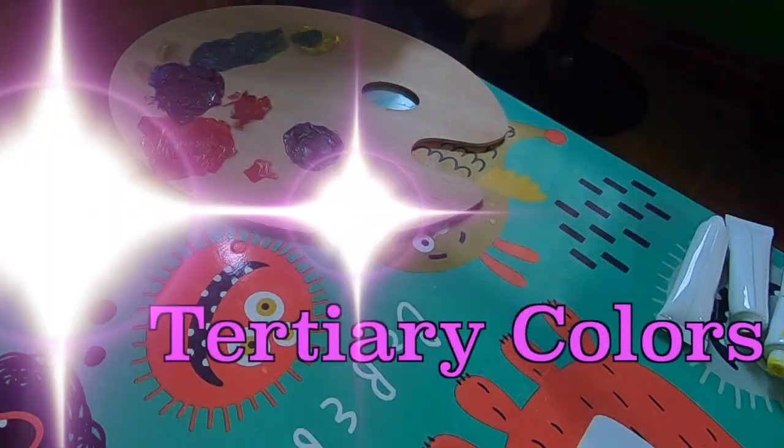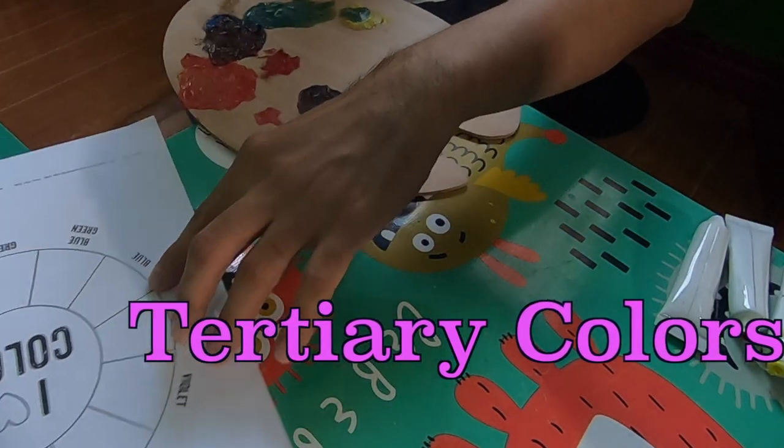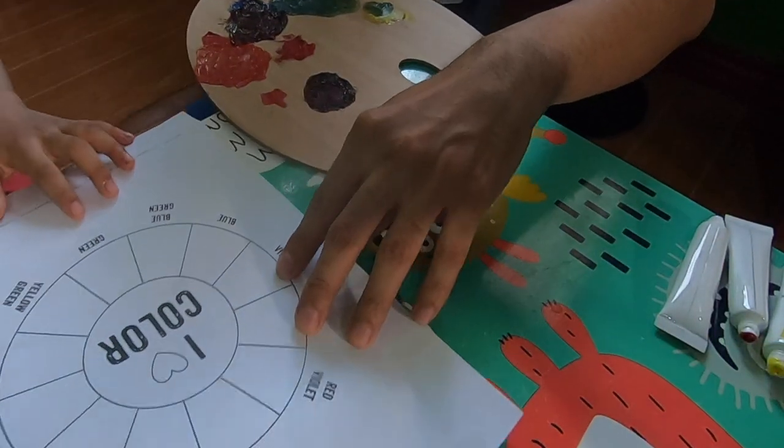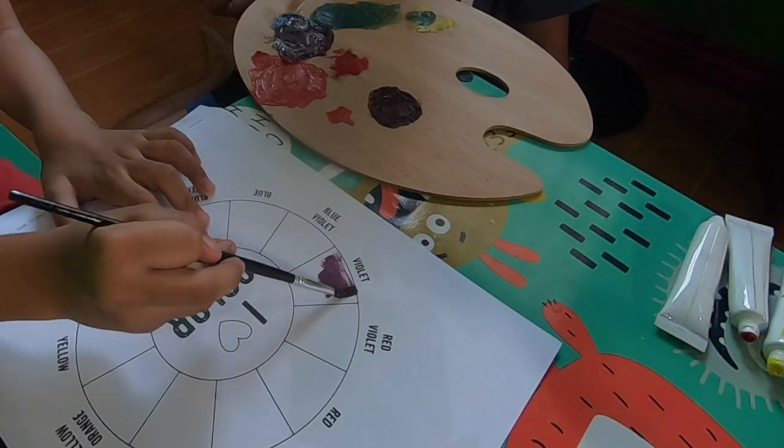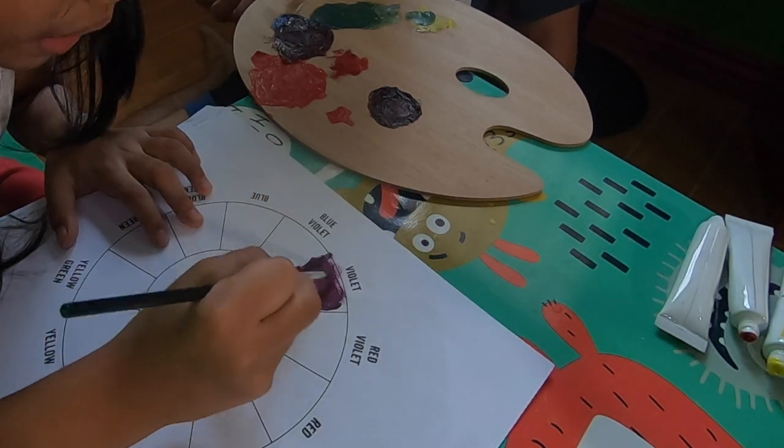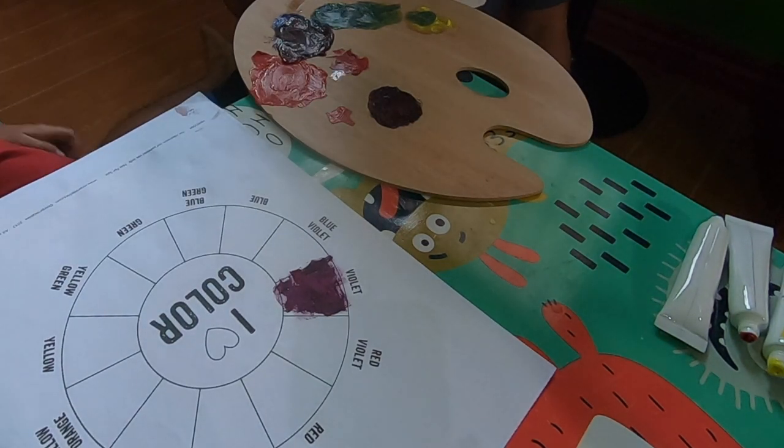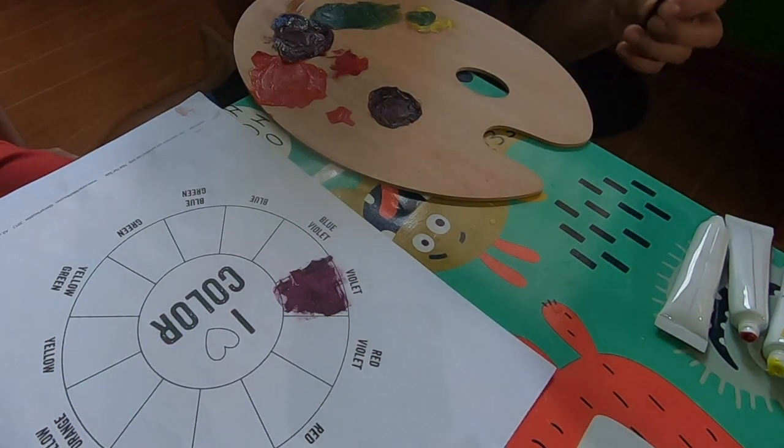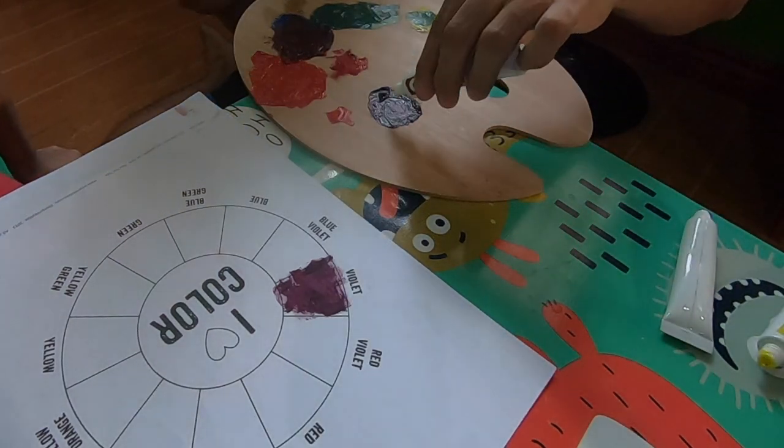This one is the tertiary color. Okay? Is it hard to do? Maybe. It's mixing the several colors. So what happens if we mix red and violet together? Red and violet together. Okay, I'm going to put red here and violet.